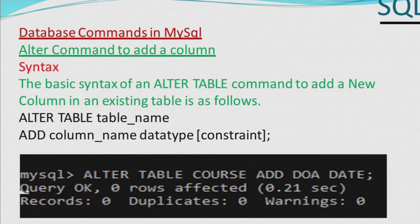Now we will discuss how to add a single column to an existing table. The syntax is: ALTER TABLE, then the table name, then ADD column name with data type. Here we are having a course table and we are adding date of admission, which is of date type. We write ALTER TABLE course, ADD DOA, where DOA is the column name and date is the data type.